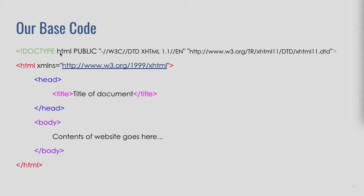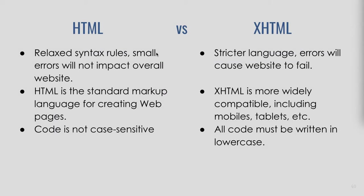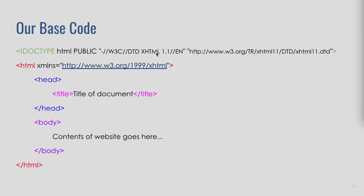Inside of that it says HTML public — we're using the DOCTYPE declaration for XHTML, which is the stricter version of HTML. Then on the second line, I have my first HTML tag in red.